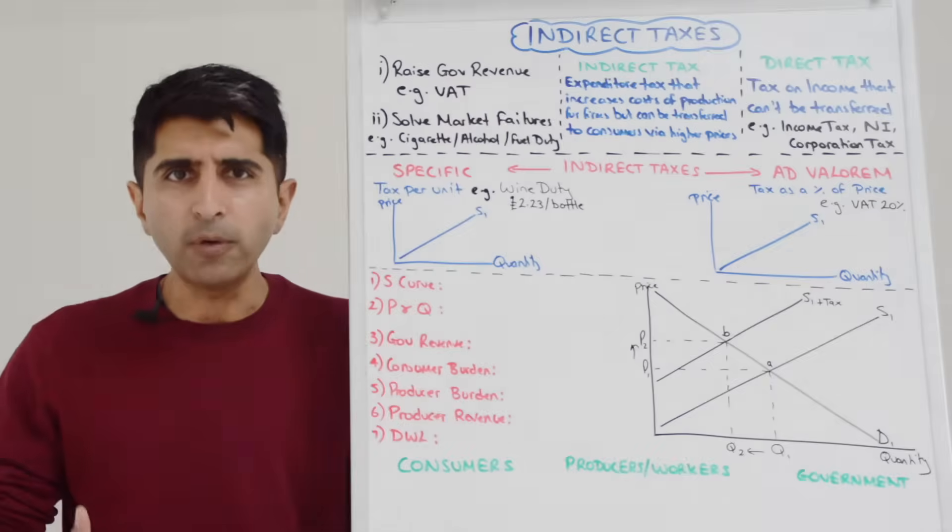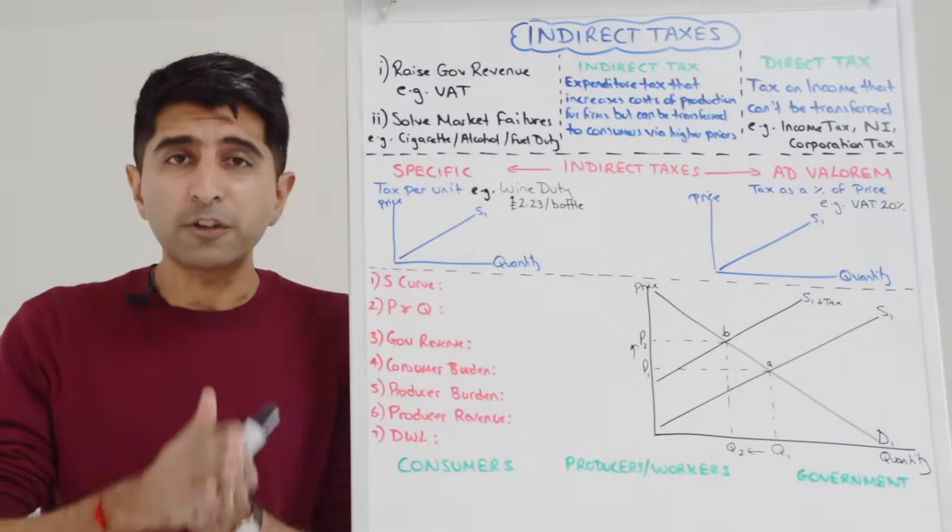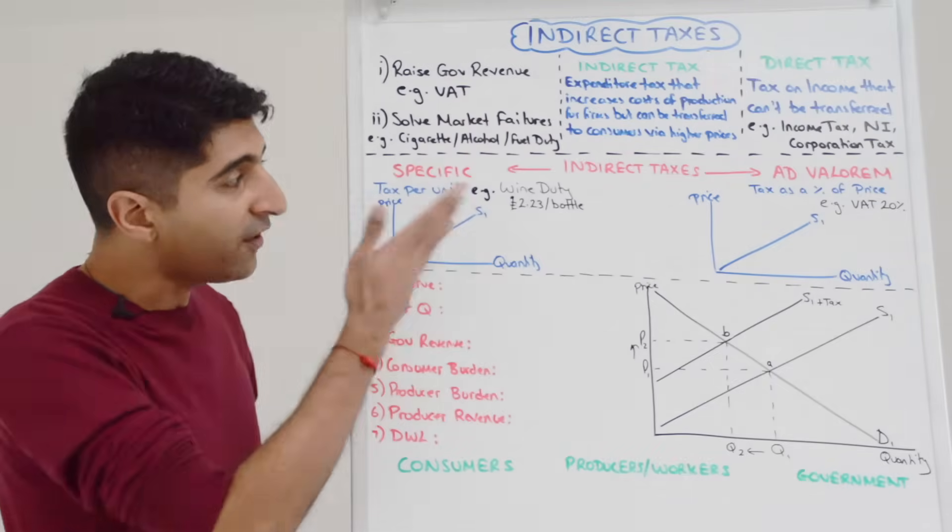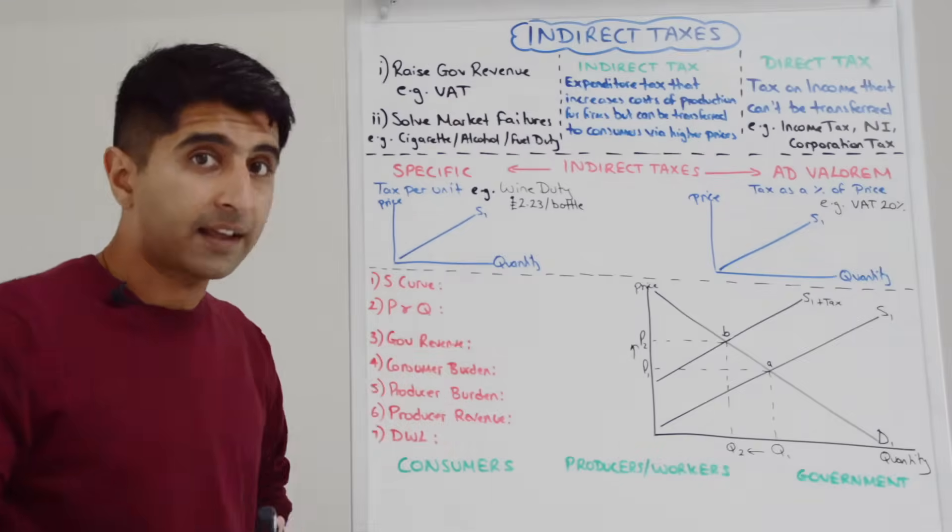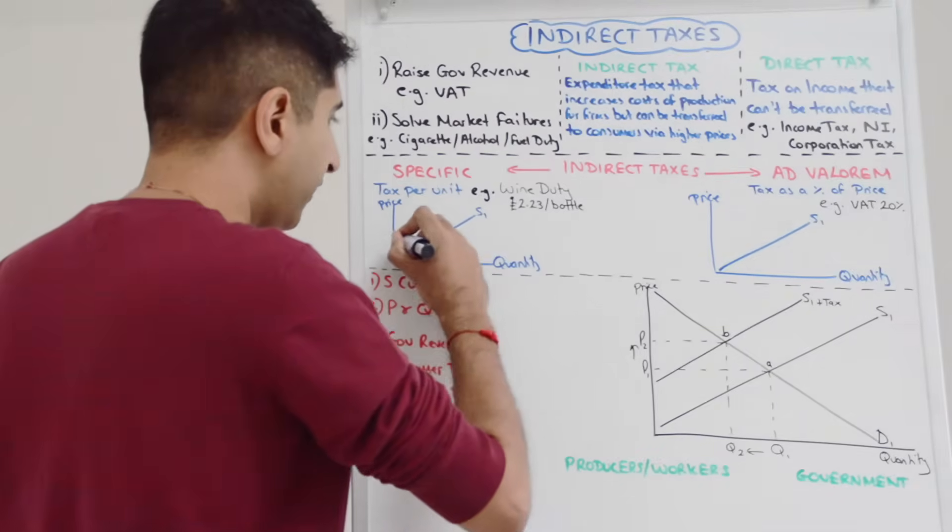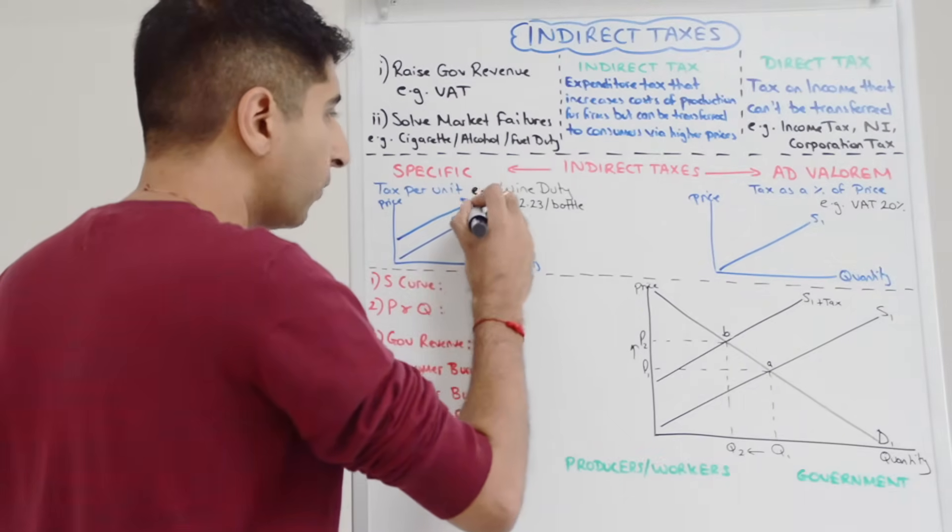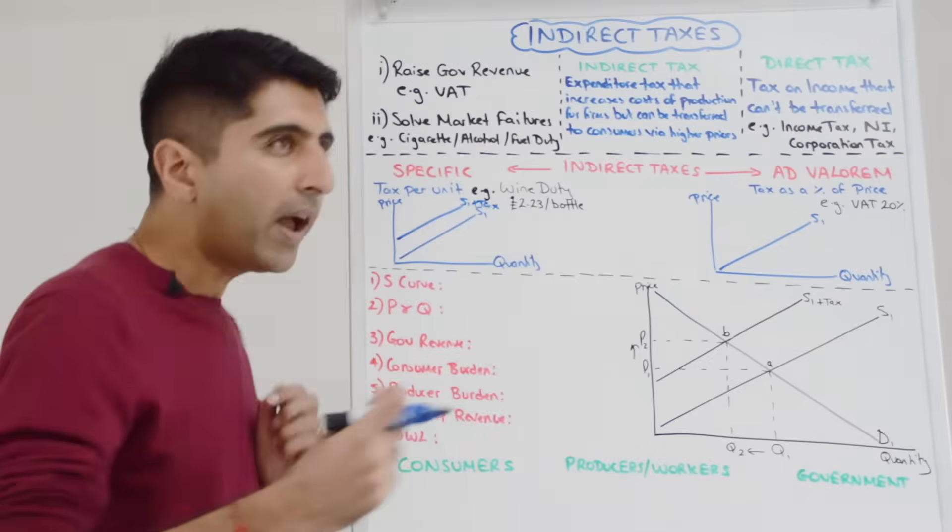Now why is this important? Well the way in which specific indirect taxes shift the supply curve is quite unique. Specific taxes shift the supply curve like this, parallel to S1 plus tax. Now why is that?